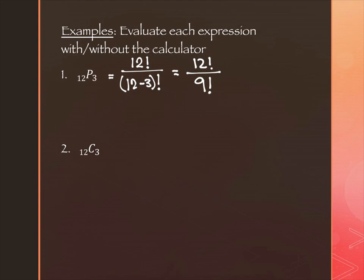Now, that's different on the next one. On the next one, I still have the 12 factorial. I still have the 12 minus 3 factorial, the 9 people who don't get to go. But I also have the 3 factorial on the bottom.